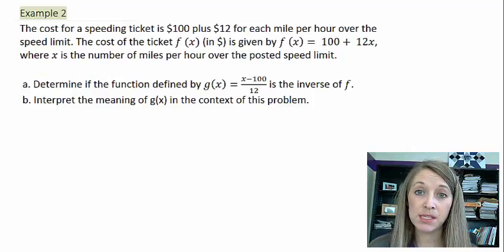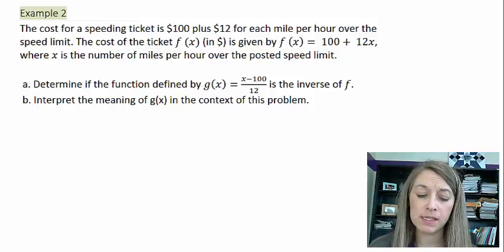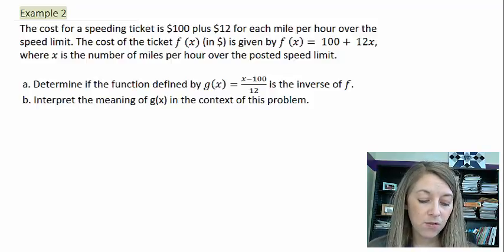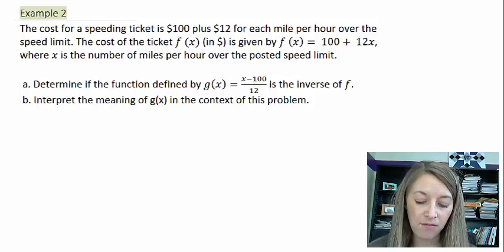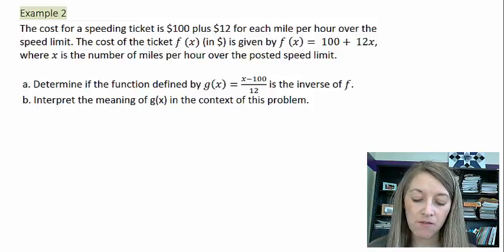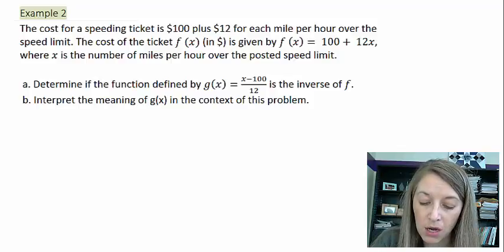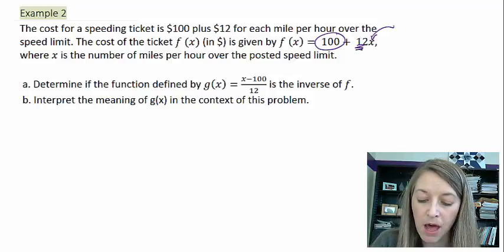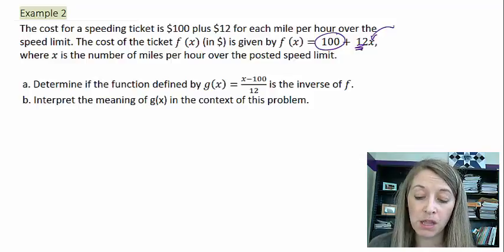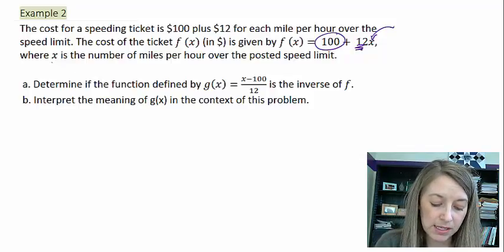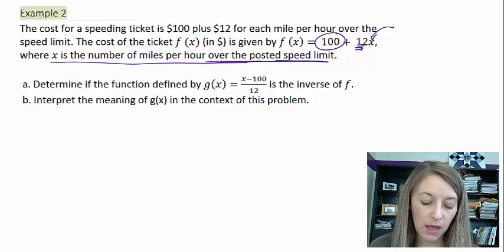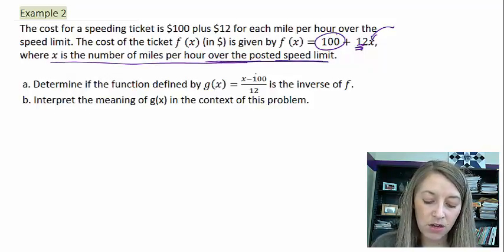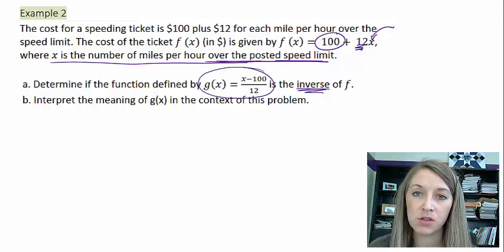But we see that this example is actually a word application, but it's going to work out the exact same way. The cost for a speeding ticket is $100 plus $12 for each mile per hour over the speed limit. The cost of the ticket f of x in dollars is given by this function. We know it's a flat rate of $100 plus 12 times the number of miles per hour over the speed limit. X is the number of miles per hour over the posted speed limit. So it says determine if the function given by g of x is in fact the inverse of f.